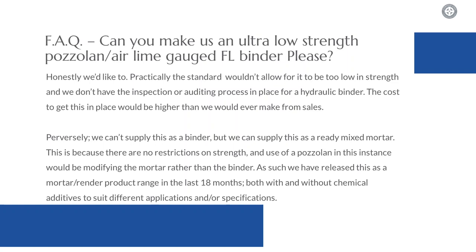Something I get asked very commonly — probably more than 20 times in the last six months — is can we please make a very low-strength binder, preferably as a formulated lime with a pozzolan? The short answer is we'd like to. The longer answer is the standard itself would probably not allow for it because we'd be trying to make something which is too low in strength. The cost to get all the paperwork and machinery and new laboratory in place would be extraordinarily high and far beyond anything we'd ever make from it in sales. Somewhat perversely, whilst we can't supply this as a binder, we can actually sell it as a ready-mixed mortar, because there are no restrictions on the strength when making a mortar and the use of a pozzolan would actually be a modification of the mortar rather than a binder.